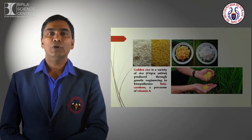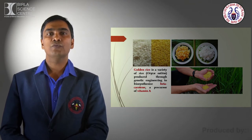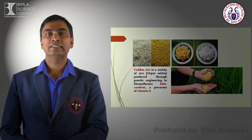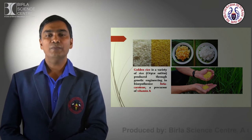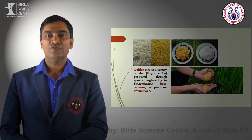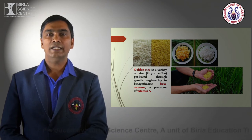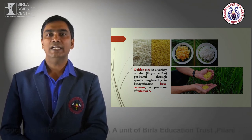Another example of designing new molecules: we can increase the concentration of vitamin A in golden rice. Vitamin A is very important for children's eyes. If a child is deficient in vitamin A, the effects initially appear in the eyes, followed by weakness.